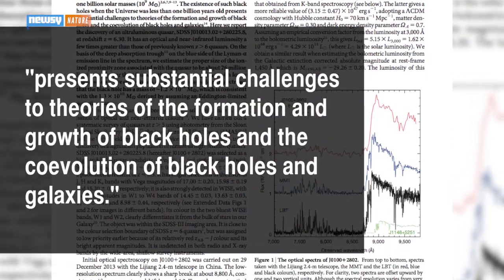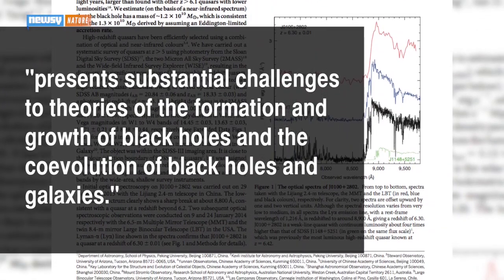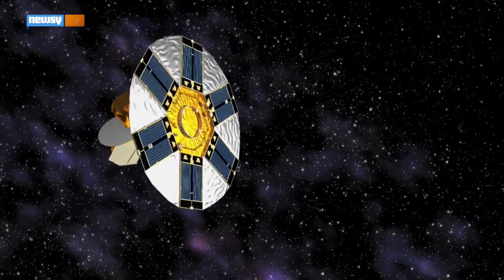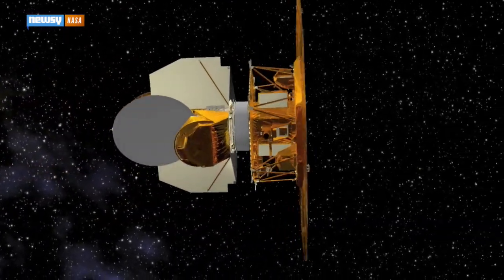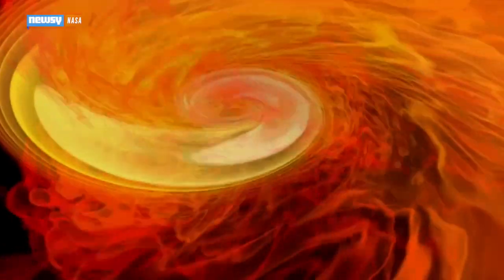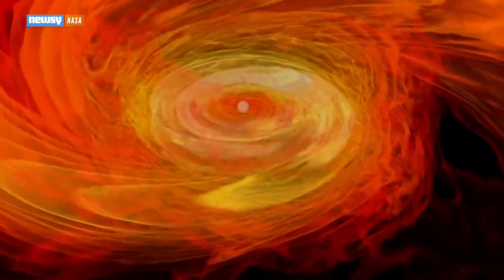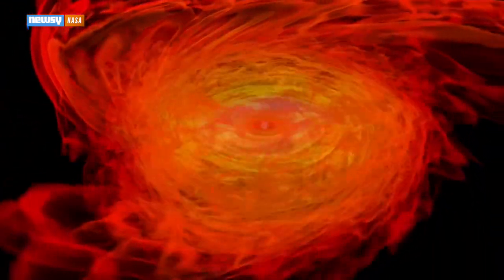That presents substantial challenges to theories of the formation and growth of black holes and the coevolution of black holes in galaxies. Considering the fact that NASA's WMAP satellite has estimated the age of the universe at around 13.7 billion years old, this black hole developed in the universe's infancy. But even its age and the amount of time it has had to suck in material doesn't explain its size or the brightness of its quasar.